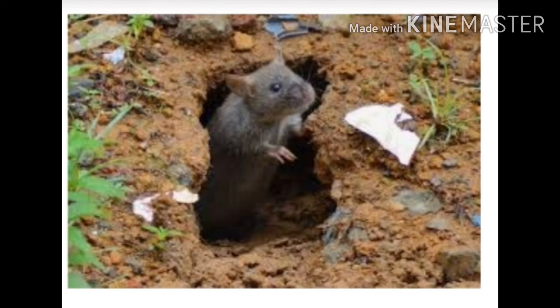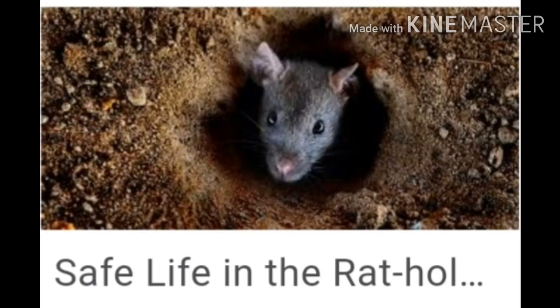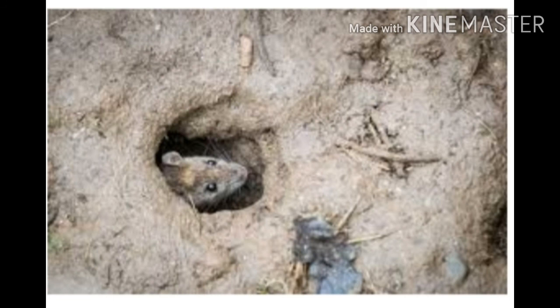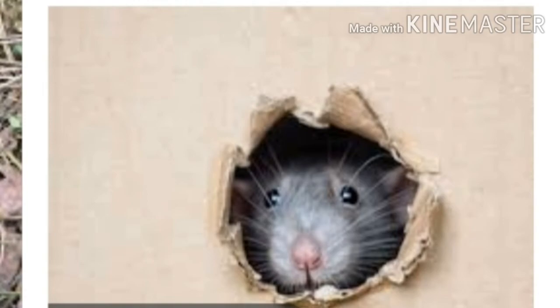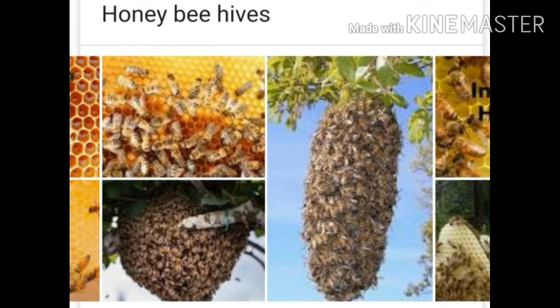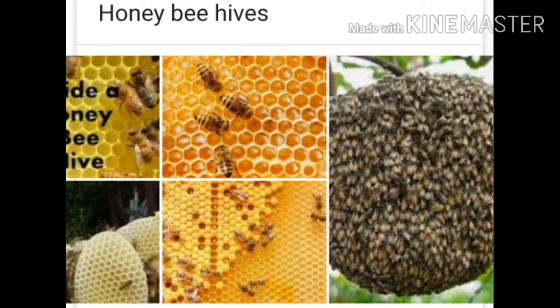Next is rat. Rats live in holes or burrows. They make holes and live inside them, which we also call burrows. Look here some of the pictures of rats making burrows. Next comes honey bee. They live in the hive, so their shelter is a hive, and they collect nectar from the flowers to make their house.